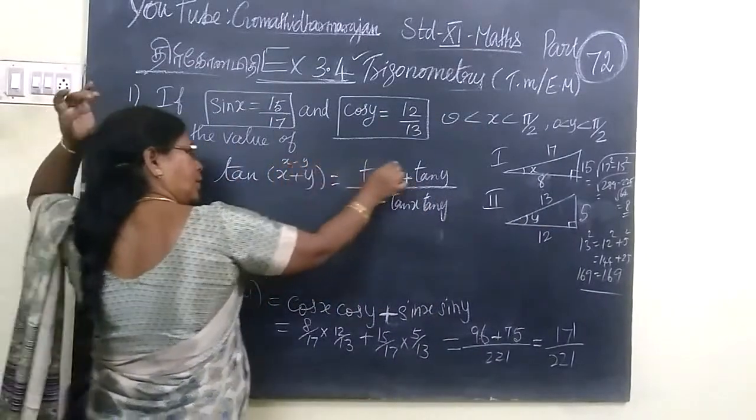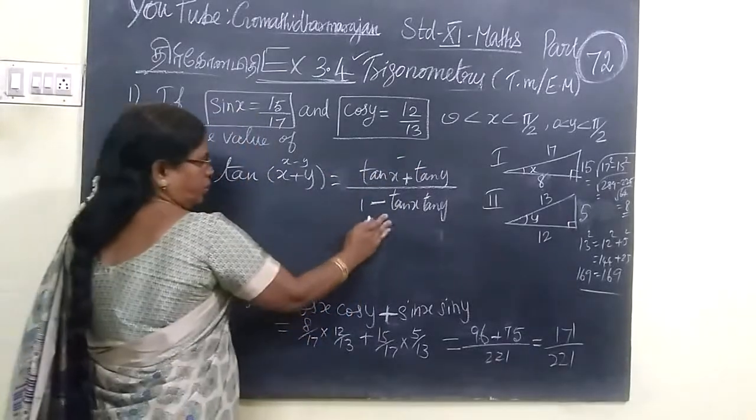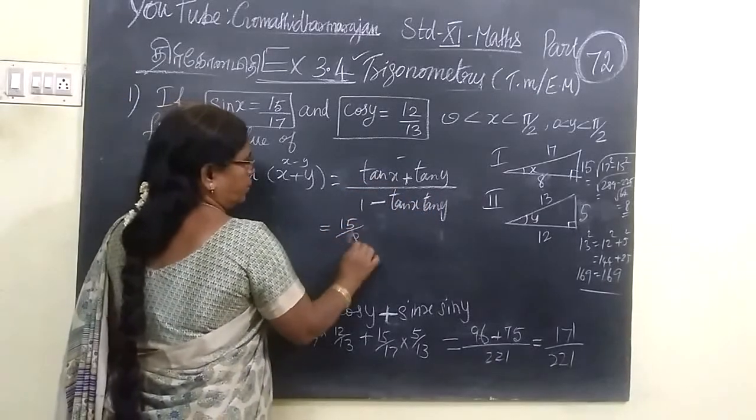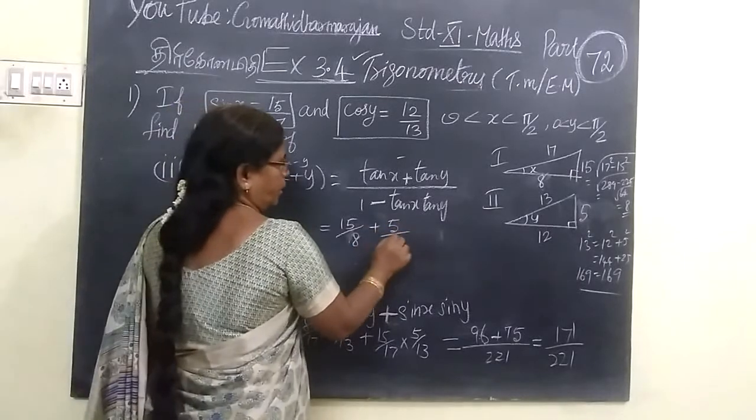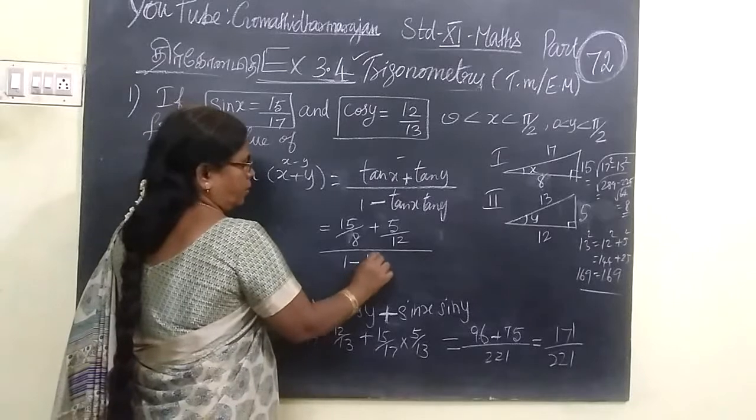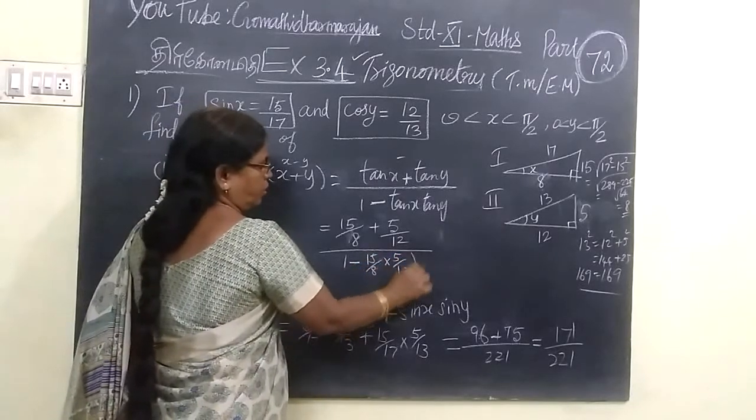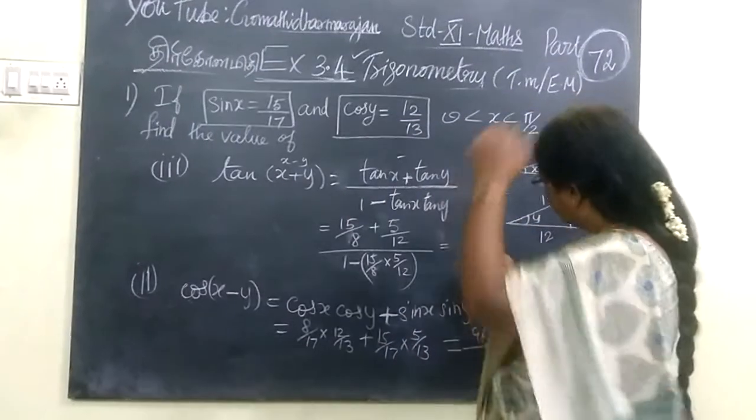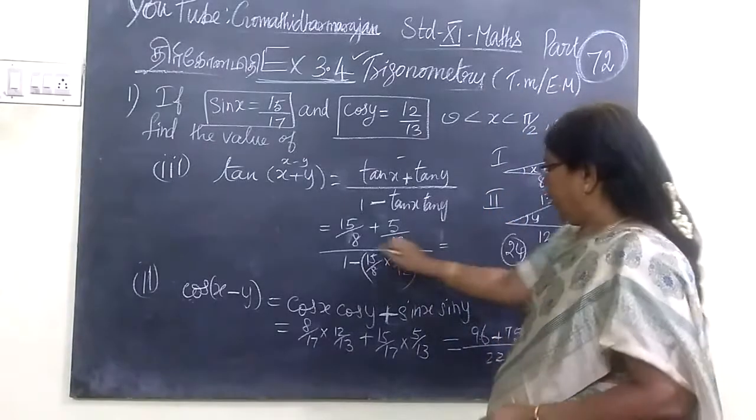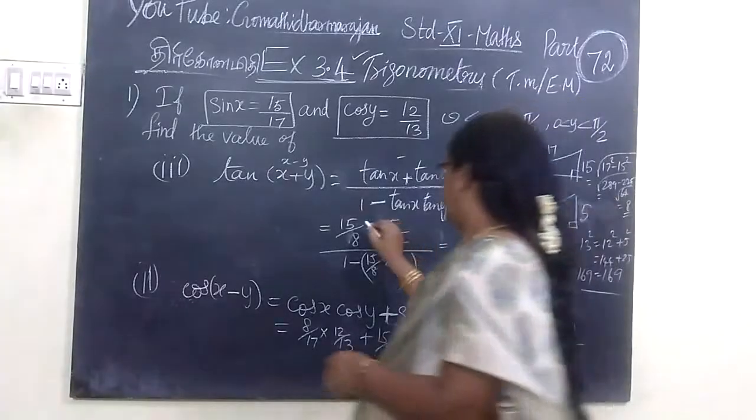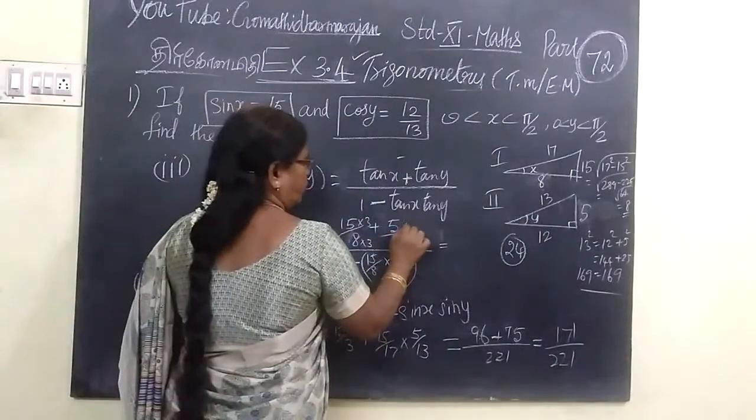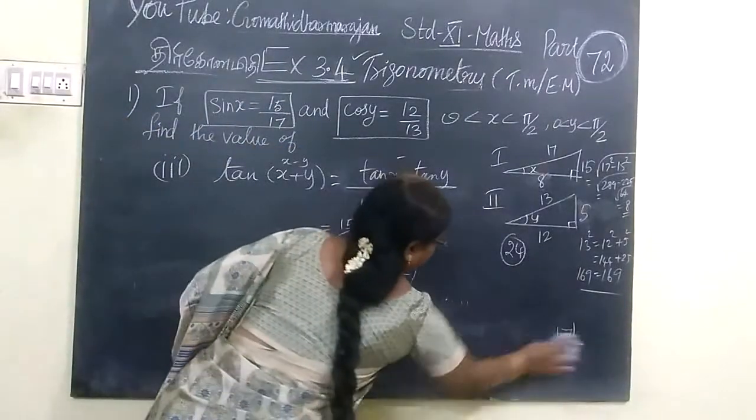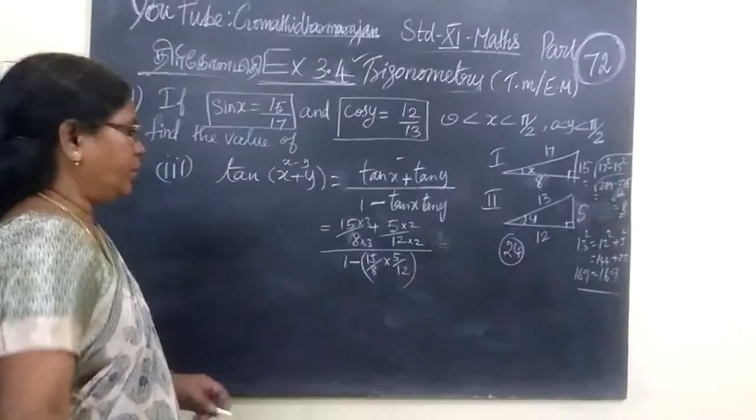Now we will substitute. Tan means opposite by adjacent, so 15 by 8, then 1 minus 15 by 8 into 5 by 12. Now we want to take the LCM. LCM is 24, so here you write into 3, into 2.